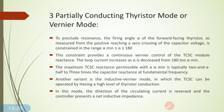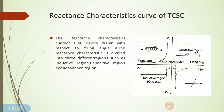The second variant of the thyristor vernier mode is the inductive vernier mode, in which the TCSC is operated with a high level of thyristor conduction. In this mode, the direction of the circulating current is reversed and the controller presents a net inductive impedance. So in the previous mode the TCSC behaves as a net capacitive impedance, whereas in this mode it behaves as a net inductive impedance.